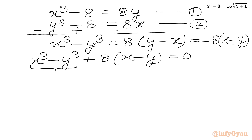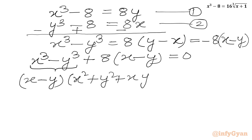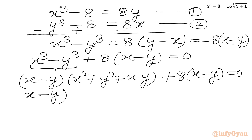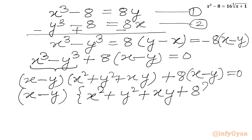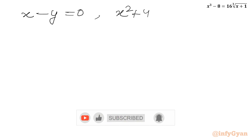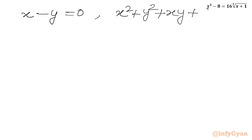We apply the a³ - b³ formula and write (x - y)(x² + y² + xy) + 8(x - y) = 0. Taking (x - y) as overall common gives (x - y)(x² + y² + xy + 8) = 0. Applying the zero product rule, either x - y = 0 or x² + y² + xy + 8 = 0.